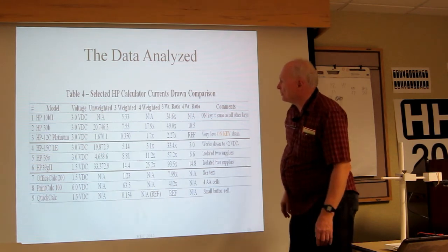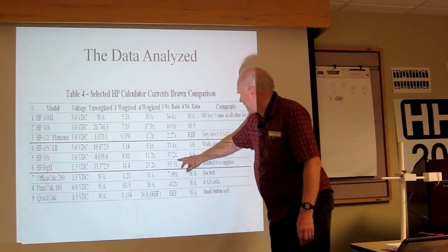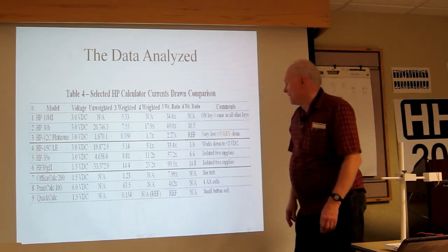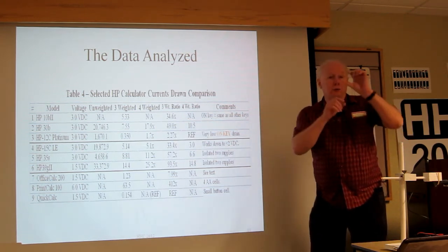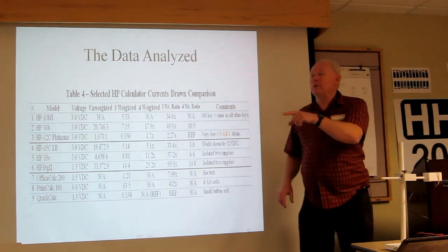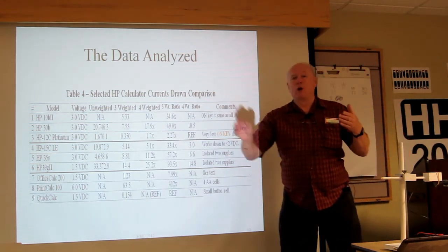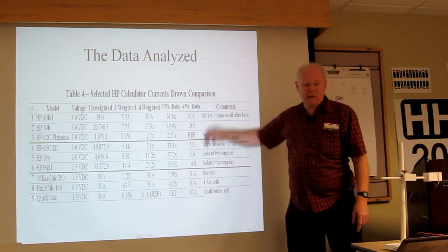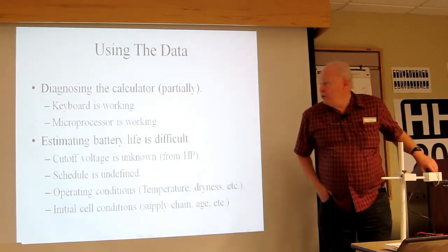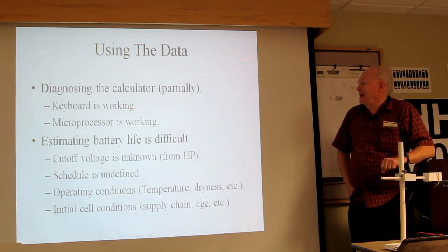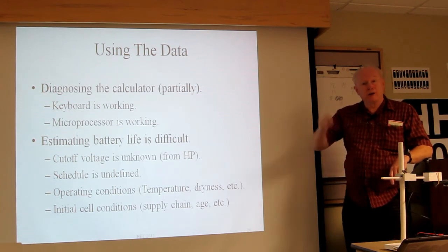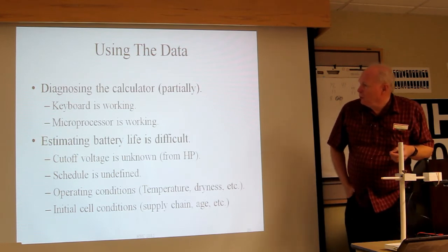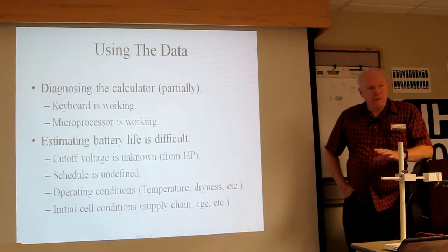412x on the print calc. I think this is the quick calc. So the quick calc is the most efficient. The office calc, well, the office calc is a large display. A lot of that current is due to the display. I have these numbers in the paper. The display shows all ones or all eights. What's the difference between them? Using the data, we can diagnose the calculator partially. We can know the keyboard is working because we can press the key and we can see a change on the current. The microprocessor is working.